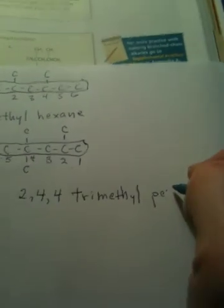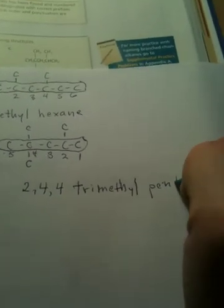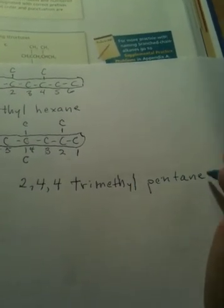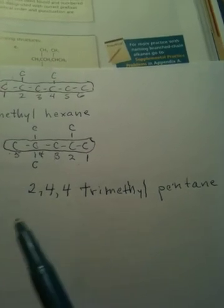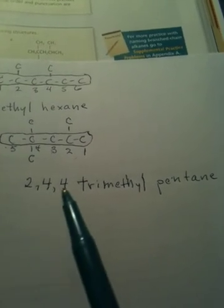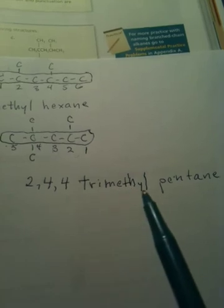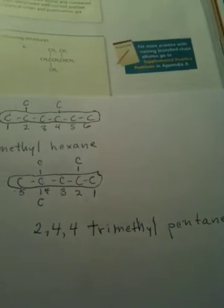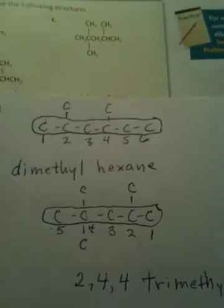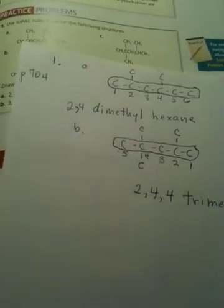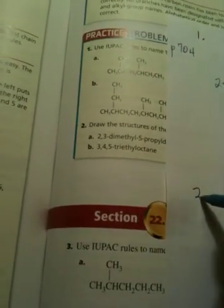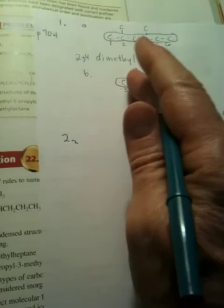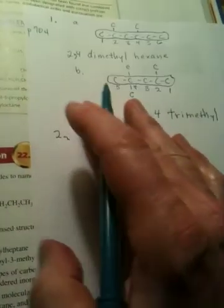And it's a pentane — P-E-N-T-A-N-E. So 2, 4, 4-trimethylpentane. I think you're probably starting to get a little bit of a handle on this. Let's go the other way now. Let's look at question number 2. In question number 2, we're given a name. And that name is 2-...